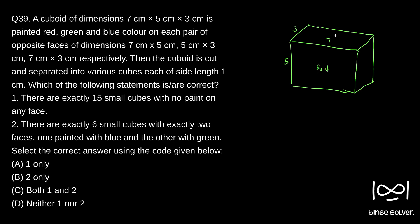It is given that the 7 × 5 cm face is painted red — so this face and its opposite face are both red. The 5 × 3 cm faces are painted green, so those opposite sides are both green. The hidden side is also green.